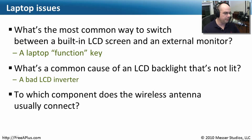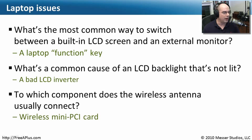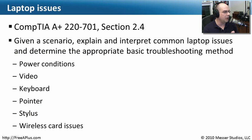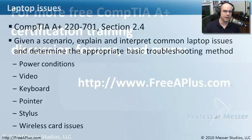Last question: to which component does the wireless antenna usually connect? That antenna connects to the wireless mini PCI card. We saw a picture of that earlier, and we saw exactly where you connect those wires so you can get the signal out and receive it properly. That covers what we need to know about laptop issues from Section 2.4, where we've learned about power conditions, video, the keyboard, pointers and stylus, and wireless card issues.